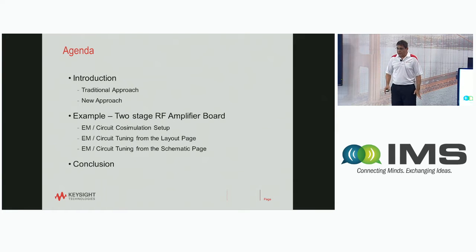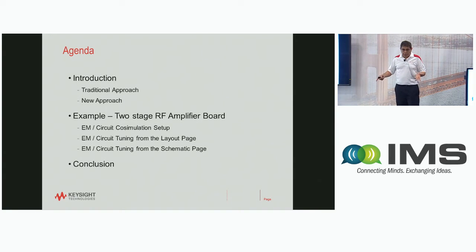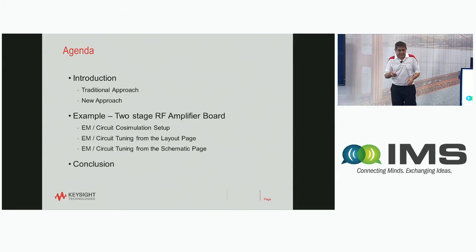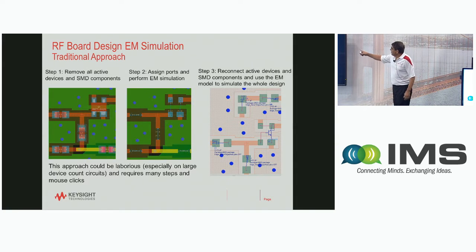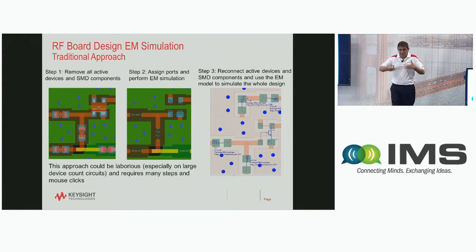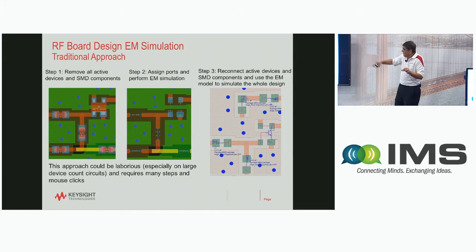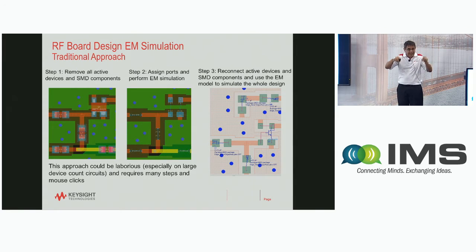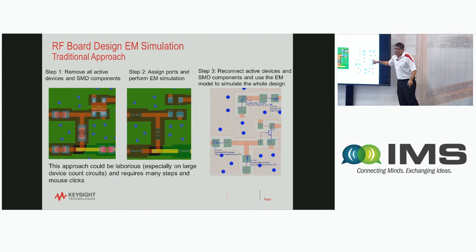I'm going to go through an introduction to show you the traditional way that people used to do it in the past, and the new approach, and I'll go through an example. With the traditional approach, if you have a board, you had to take the SMT components, the transistors, and place ports at every location where an SMT component is. Then you run EM simulation with the ports, create a look-alike component, put it on the schematic, put the components back, connect them, and do the simulation.